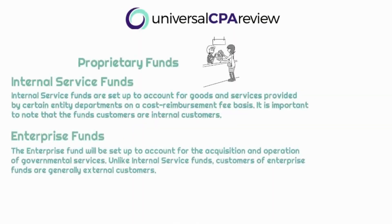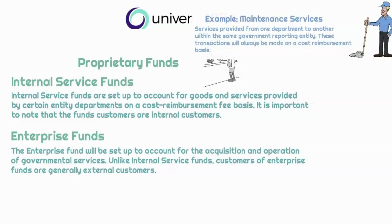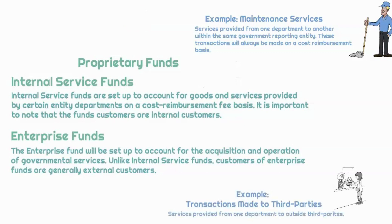Now let's talk about our funds within the proprietary funds — those two business-like funds that operate within a government. For your exam, you need to know about the internal service fund as well as the enterprise fund. The internal service fund is going to be used to track goods or services internally — it tracks services between departments on a cost reimbursement fee basis. An example of this could be maintenance departments providing equipment maintenance services to other departments. This cost reimbursement basis is the key characteristic that differentiates the internal service fund from the enterprise fund.